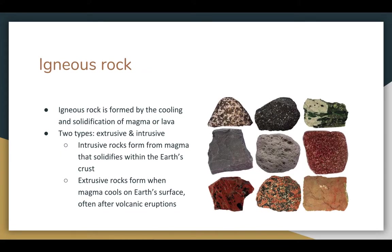Igneous rock is formed by the cooling and solidification of magma or lava. There are two types of igneous rock: extrusive and intrusive. Intrusive rocks form from magma that solidifies within the Earth's crust and then comes up to the surface, while extrusive rocks form when magma cools on Earth's surface — like when a volcano erupts and all the magma and lava cools down and solidifies. This picture is an example of some types of igneous rock.